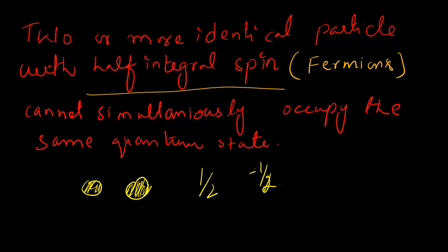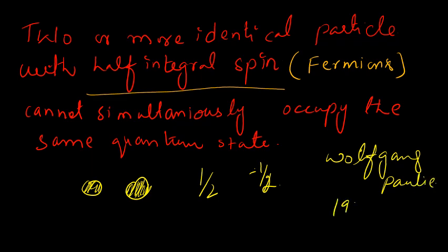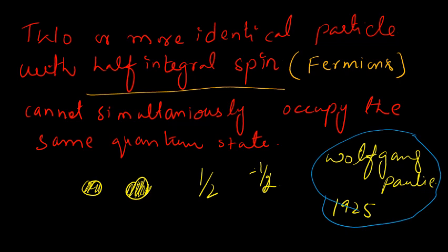This principle was first formulated by an Austrian physicist named Wolfgang Pauli. He stated this law in 1925, and he actually formulated it first only for electrons, that is for fermions. Later on, this law was extended to all fermions.